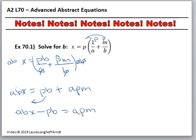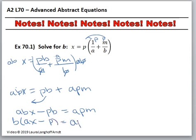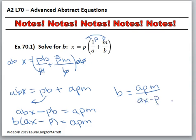Now I'm going to factor out the B, so I have B times AX minus P equals APM. And I'm going to divide out the AX minus P, so I'm left with B equals APM over AX minus P. Ta-da!